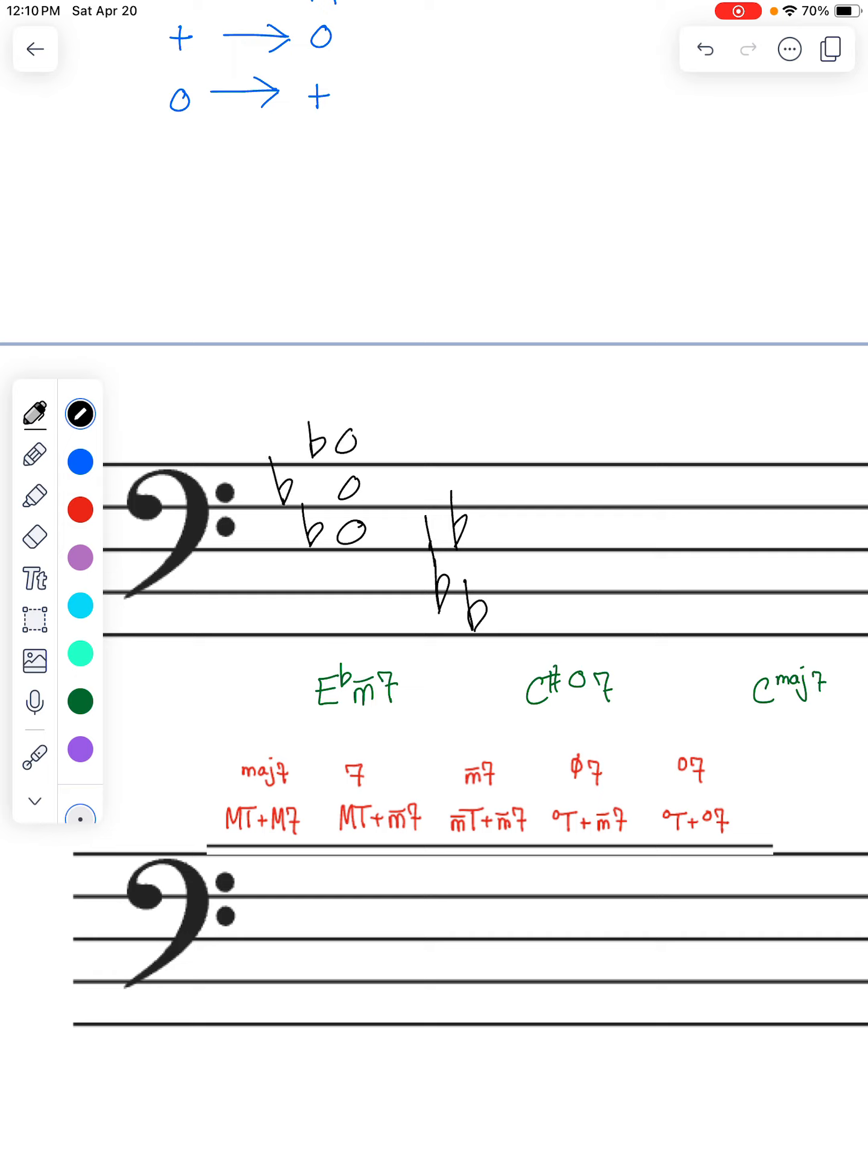We know we need to make it minor, and then we need to add a minor 7 on top of it. So we've got D. D-natural is our major 7, and we need a minor 7. So we need D-flat.